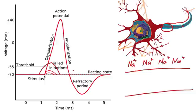When that happens, voltage-gated sodium channels are going to open and that's going to cause sodium to rush into the cell. Of course that's going to start at the axon hillock, and sodium is going to rush in, making the membrane potential even more positive.